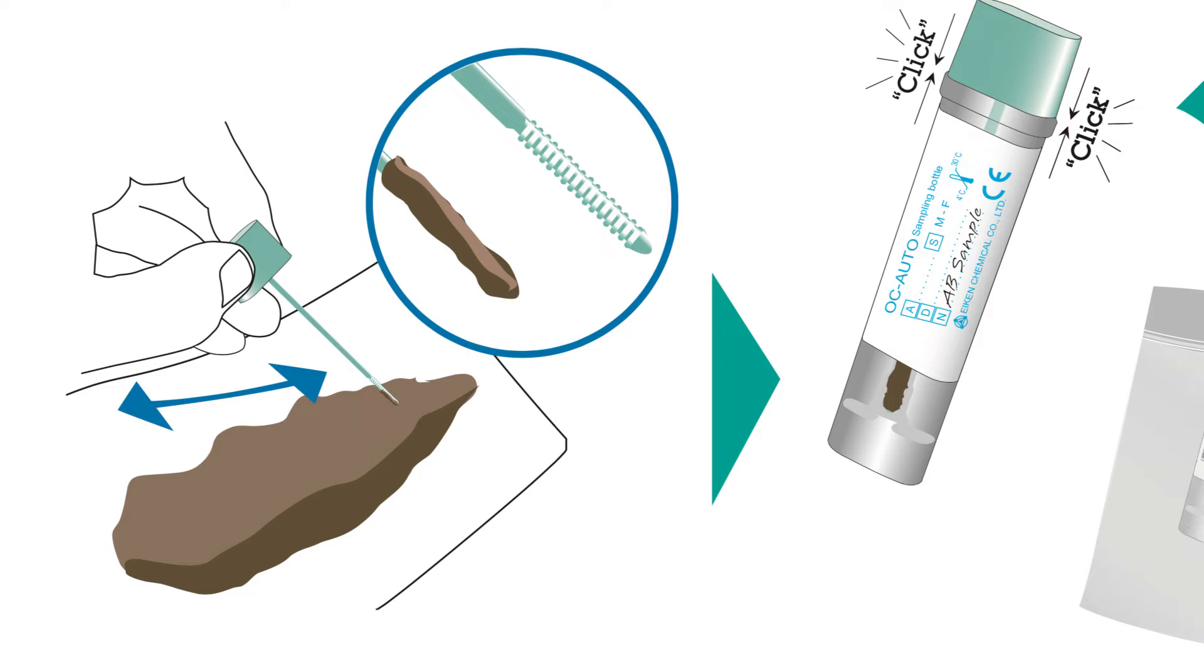You need to make sure that all of the small grooves on the end of the picker are filled with the faecal sample. If there's not enough sample, you would have risk of a false negative result.